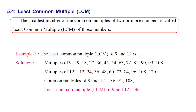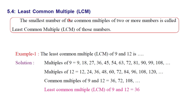Least common multiple, LCM. The smallest number among the common multiples of two or more numbers is called the least common multiple of those numbers.